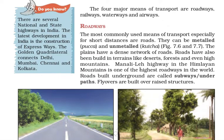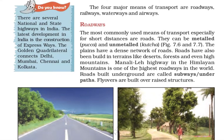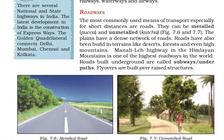Roadways are the most commonly used means of transport, especially for short distances. Whenever you go to school — with a cycle, scooter, bike, car, or bus — you only use roads. You never use waterways, railways, or airways for short distances because roads are used for nearby travel.